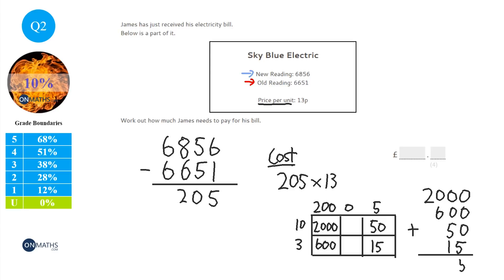Okay, so the first one is 5, then 6, then 6, then 2. Now that's in pence. So in pounds, that would be 26 pounds and 65 pence.